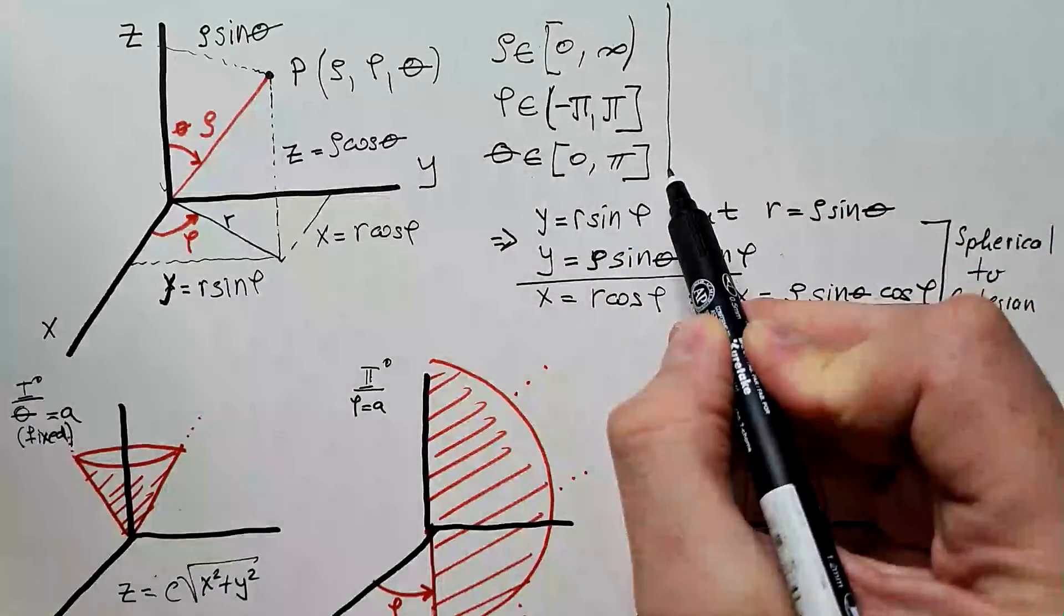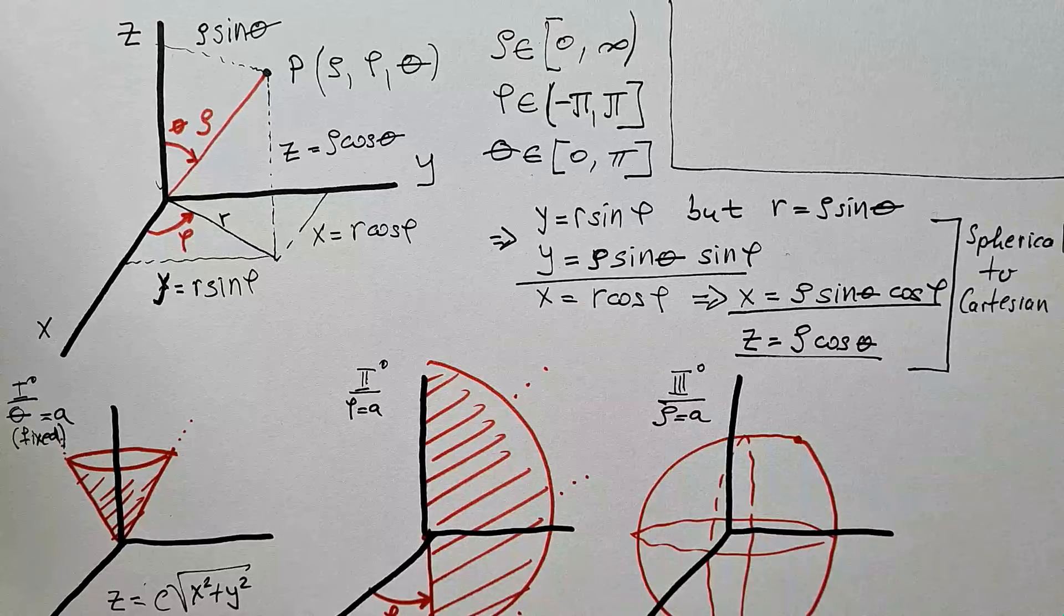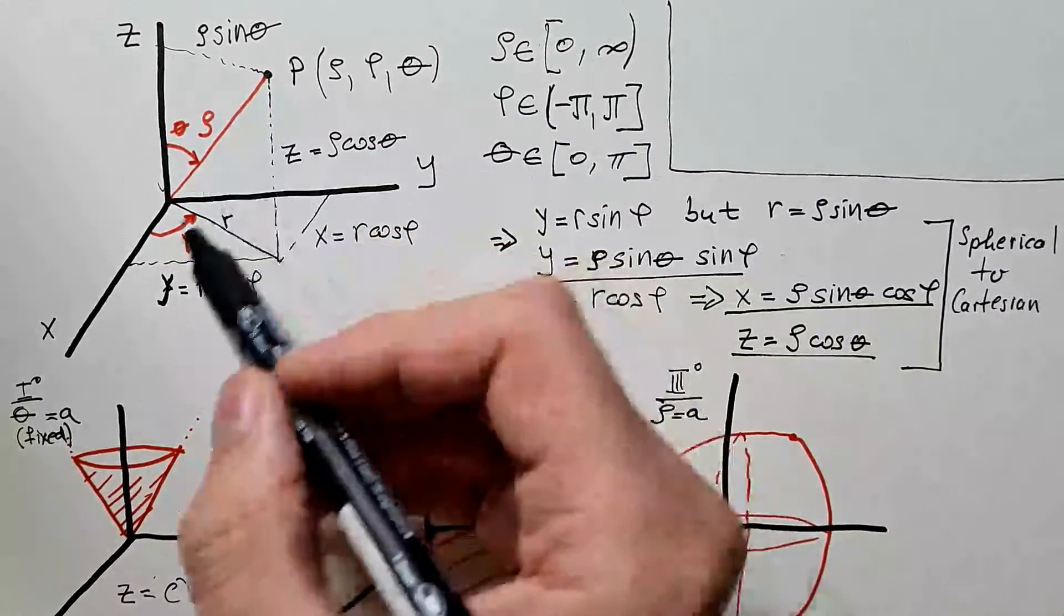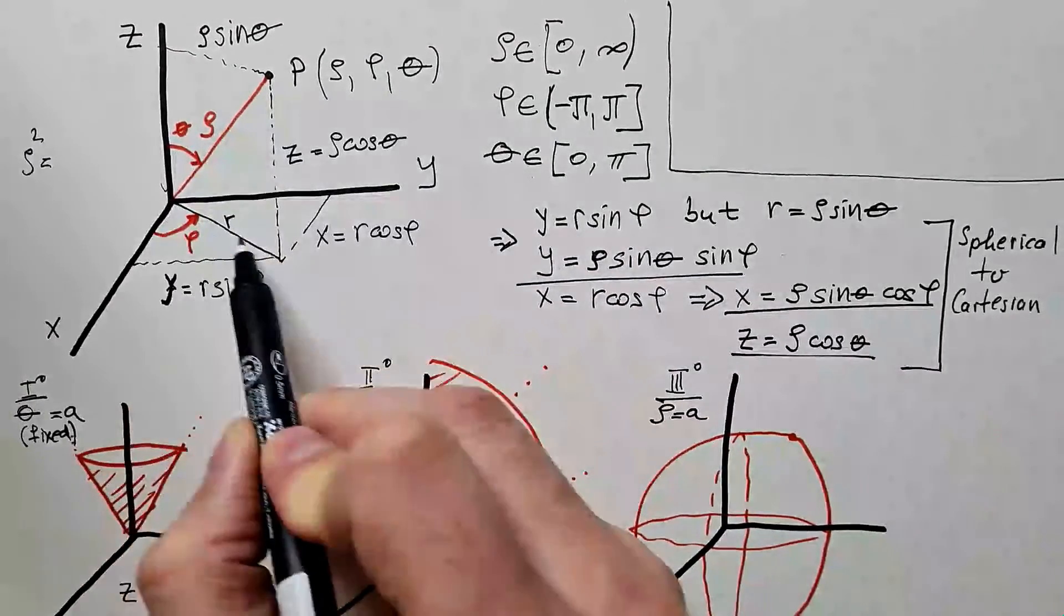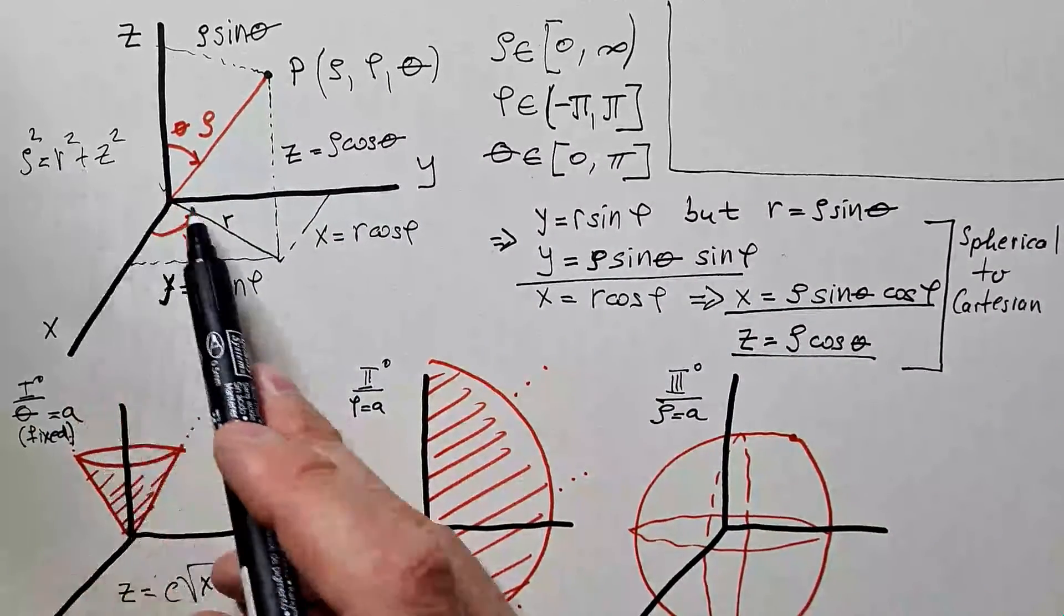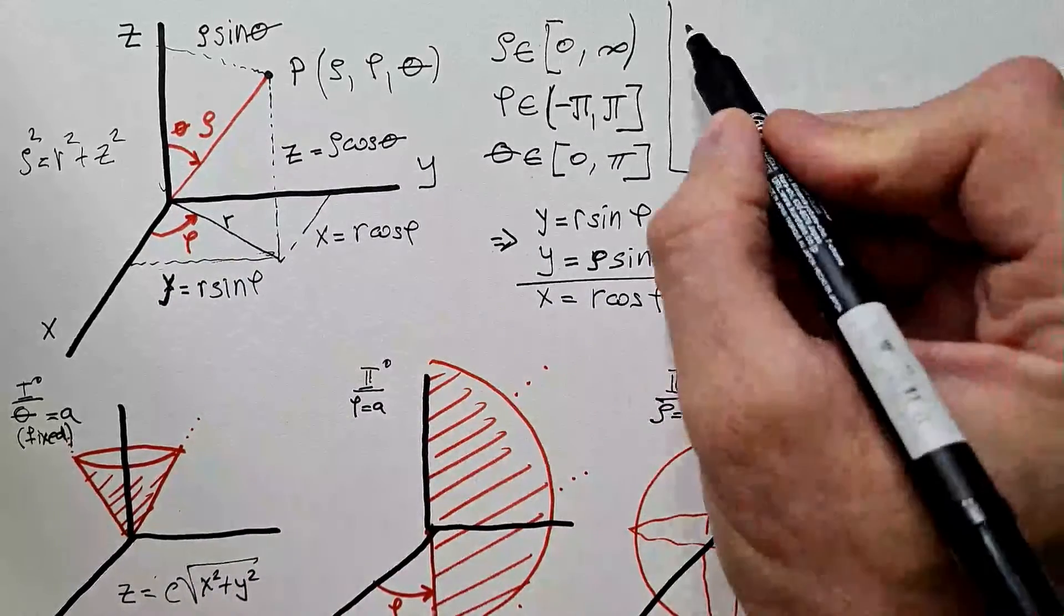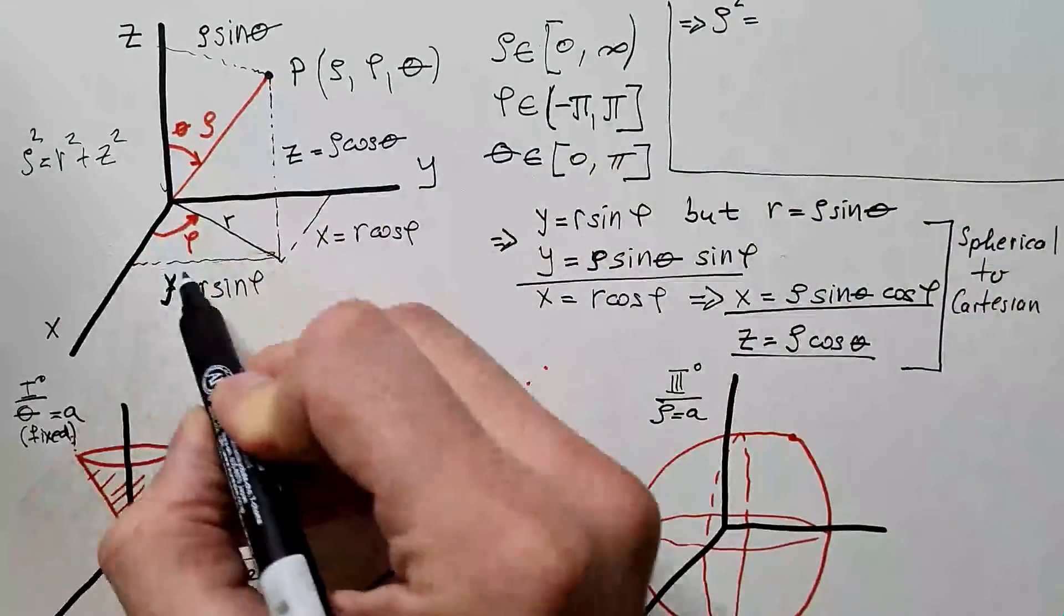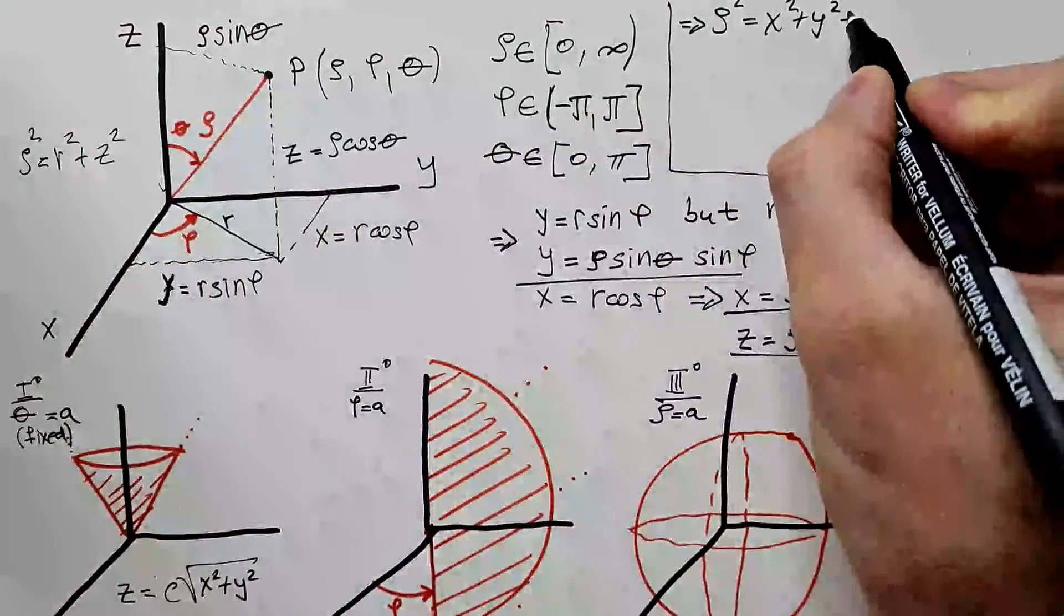Let's try to squeeze here conversion from Cartesian to spherical coordinate system. Notice from this figure that rho squared is r squared plus z squared. But r squared is x squared plus y squared, which means that rho squared is x squared plus y squared plus z squared.